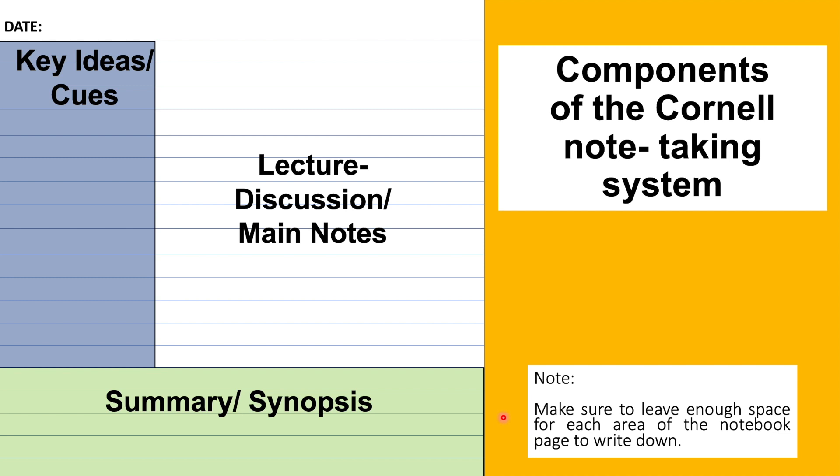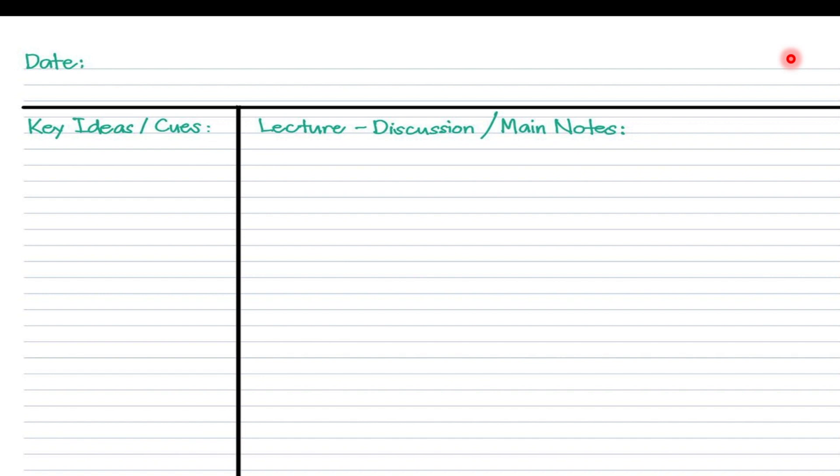For example, this is my notebook - this could also be your notebook. It's good to have the date here, or you may put it at this portion. What's important is you have the date so that you can easily go back and locate the information that you really need. Then here we have the key ideas or cues portion. Here would be the lecture discussion or the main notes portion. And at the bottom is the summary or synopsis portion.